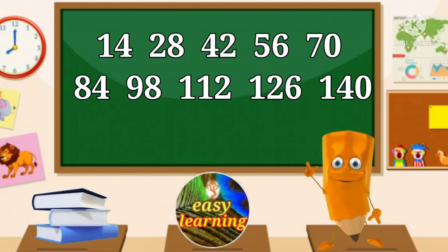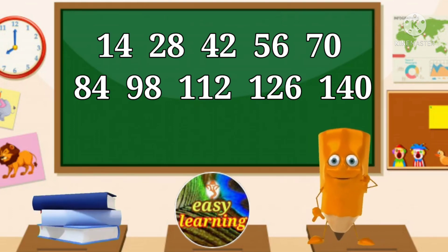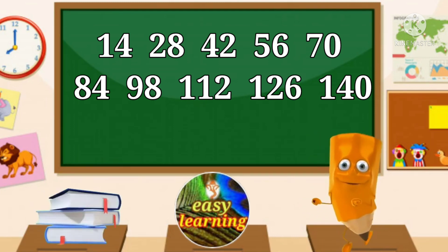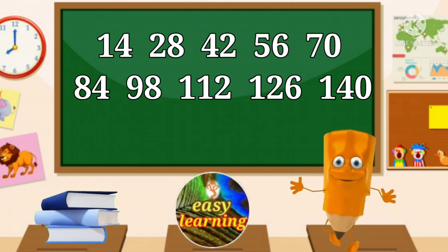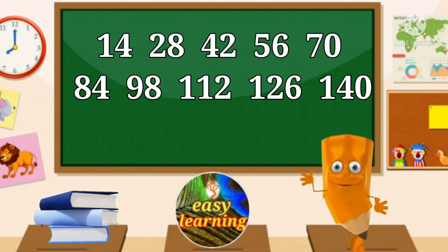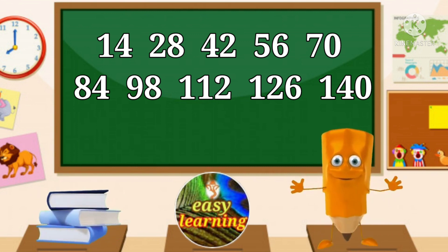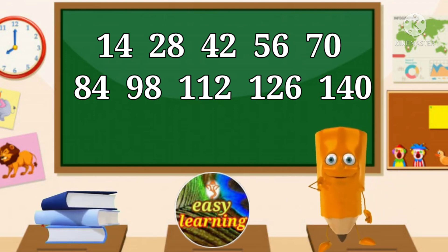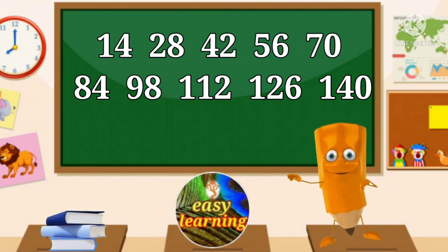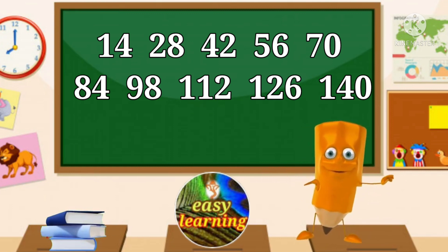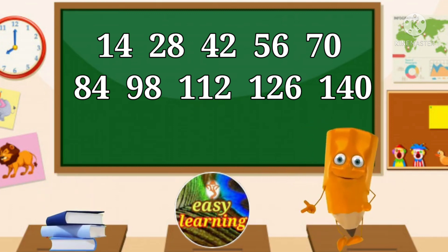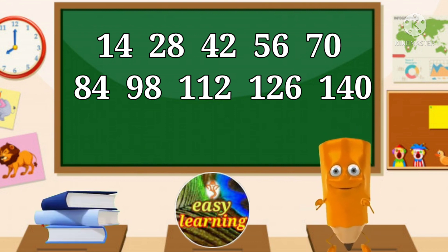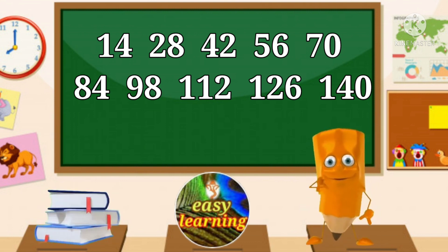14 1s are 14. 14 2s are 28. 14 3s are 42. 14 4s are 56. 14 5s are 70. 14 6s are 84. 14 7s are 98. 14 8s are 112. 14 9s are 126.